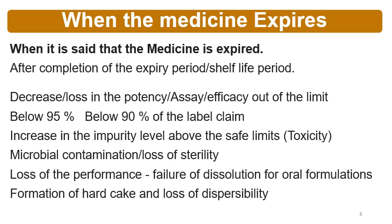An increase in impurity level above safe limits also constitutes expiry. ICH limits are defined for impurities, and if impurities go beyond those safe limits, the product is expired, because these limits are based on toxicity. Microbial contamination or loss of sterility also means the product is expired. Loss of performance — such as failure of dissolution for oral formulations, or failure of actuation and dose per activation for aerosol formulations — also means the product is expired.